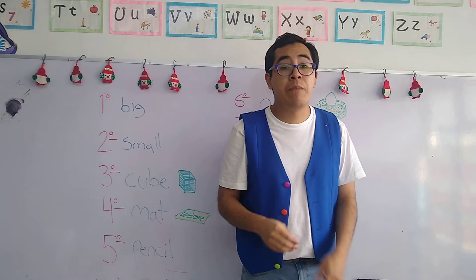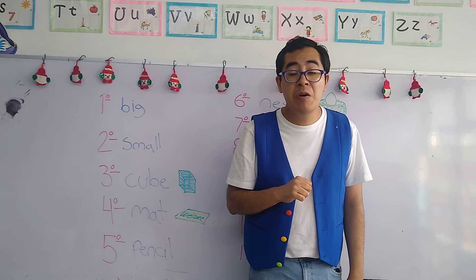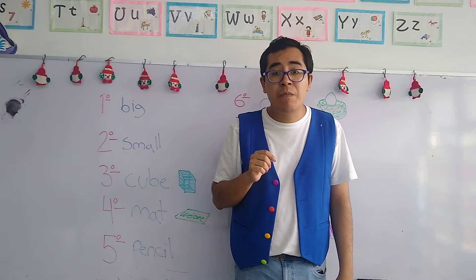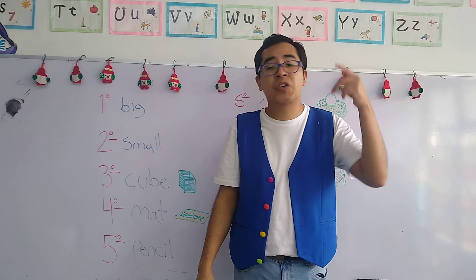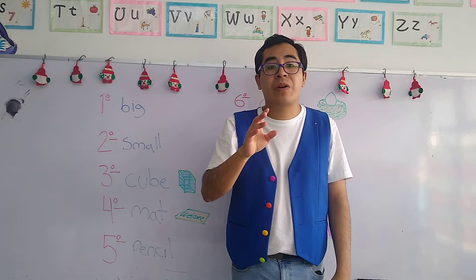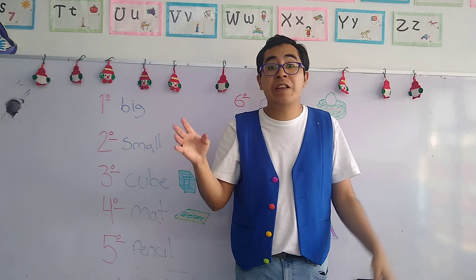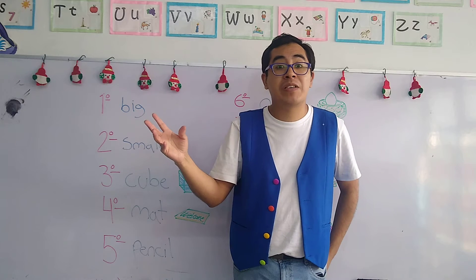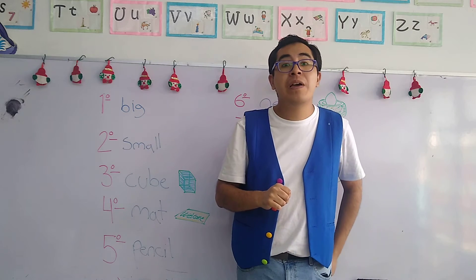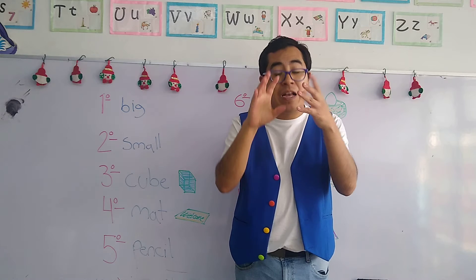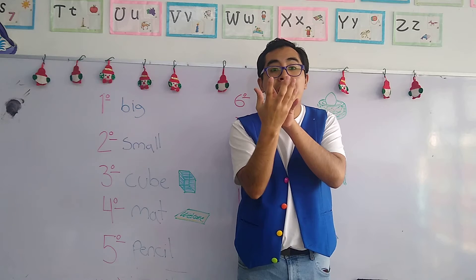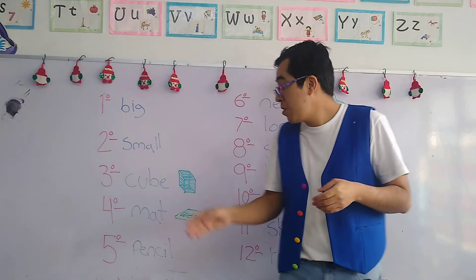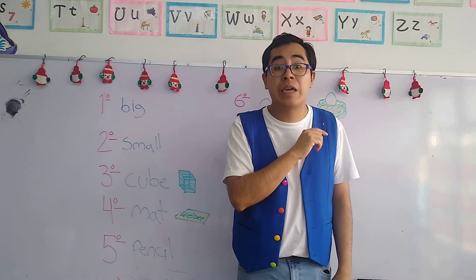Let's continue with the third word. We have "cube." Now, the cube is a geometric shape that we are going to see in the future. The most common geometric shapes are the triangle, the circle, the square, the oval, and the star — esas son figuras geométricas muy comunes. But in the future, in our class, we are going to see other types of shapes, like the cube, which has a tridimensional form — tienen una forma tridimensional que estaremos viendo en el futuro.